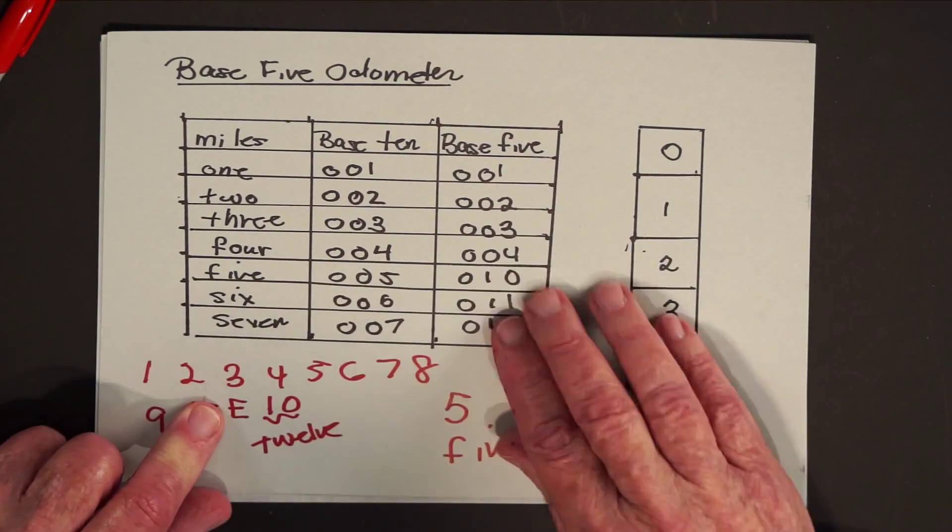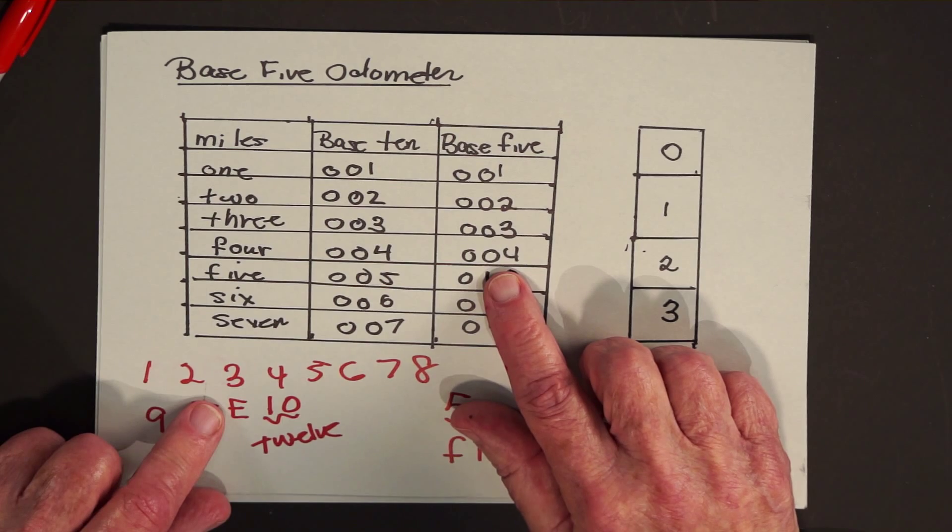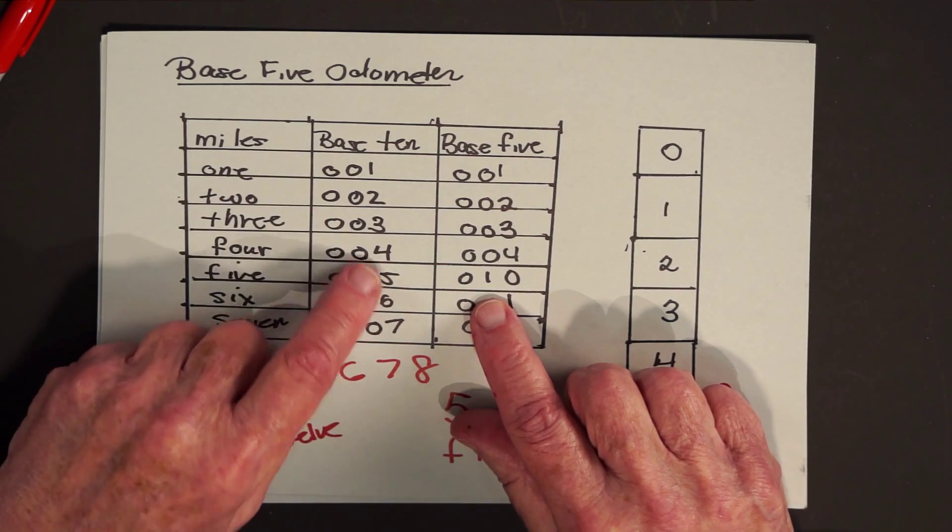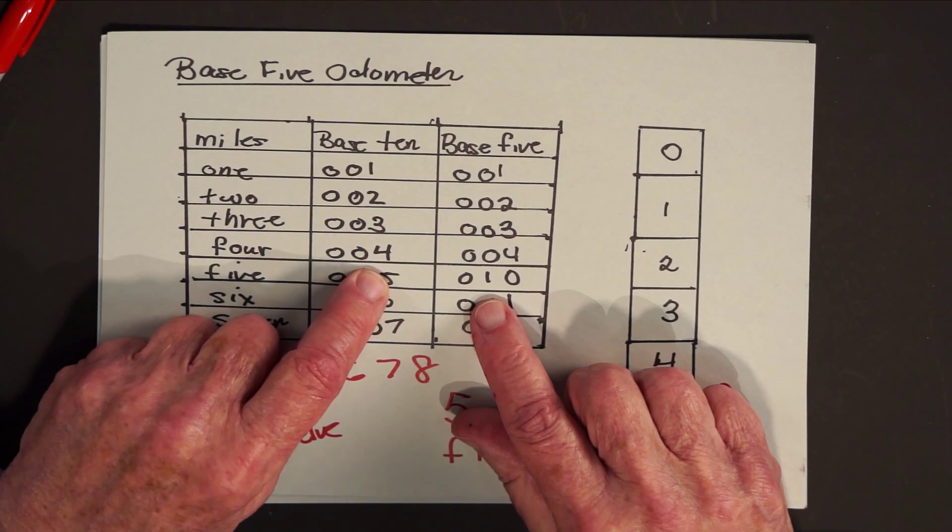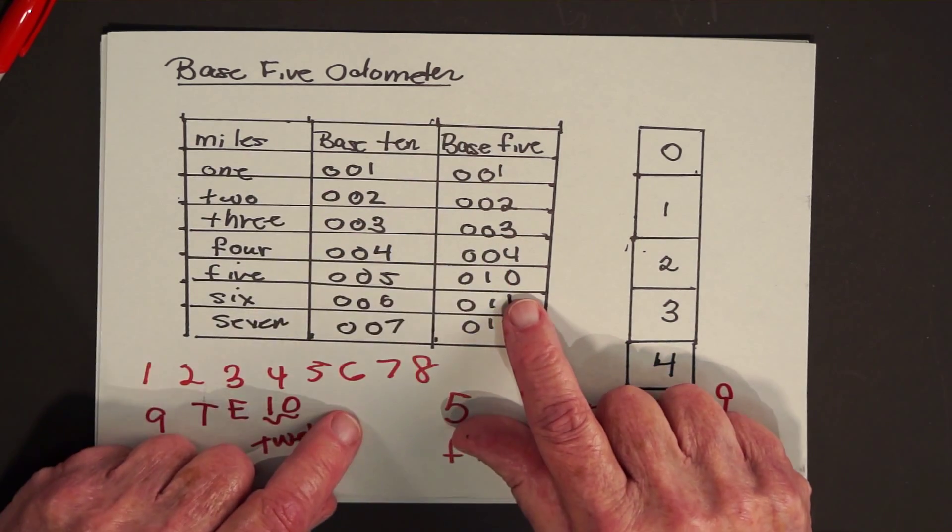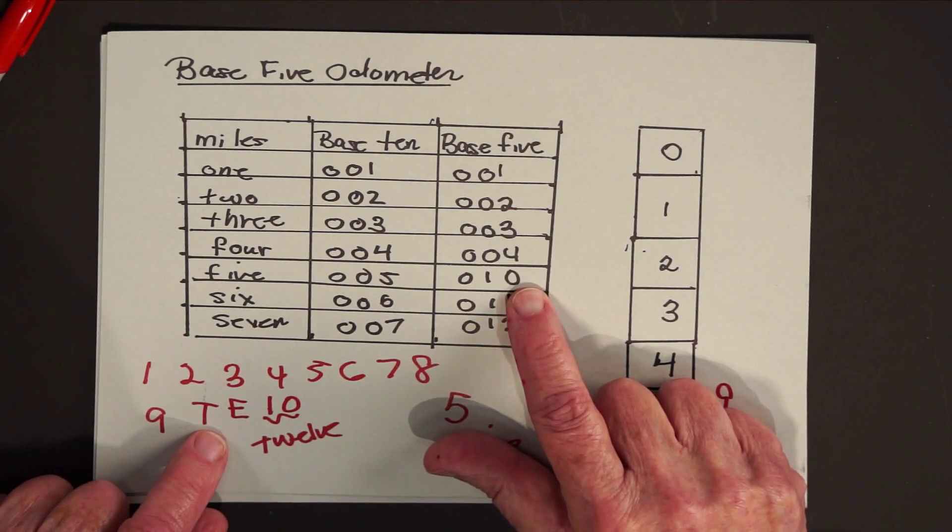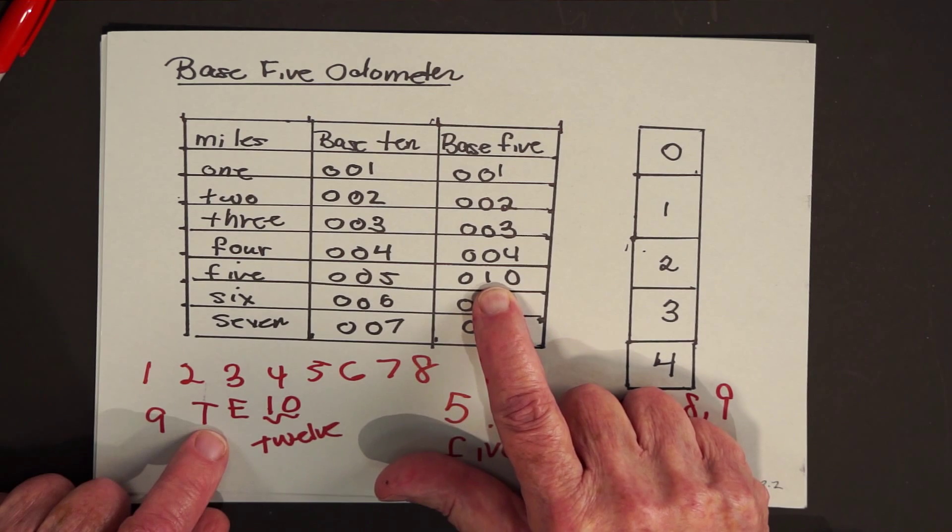On base five, everything would look the same up until we got to 004. What would happen on the next mile, the base 10 odometer, the four would turn into a five. On the base five odometer, you see what happens is the four turns into a zero and that clicks the next gear so we see a one.